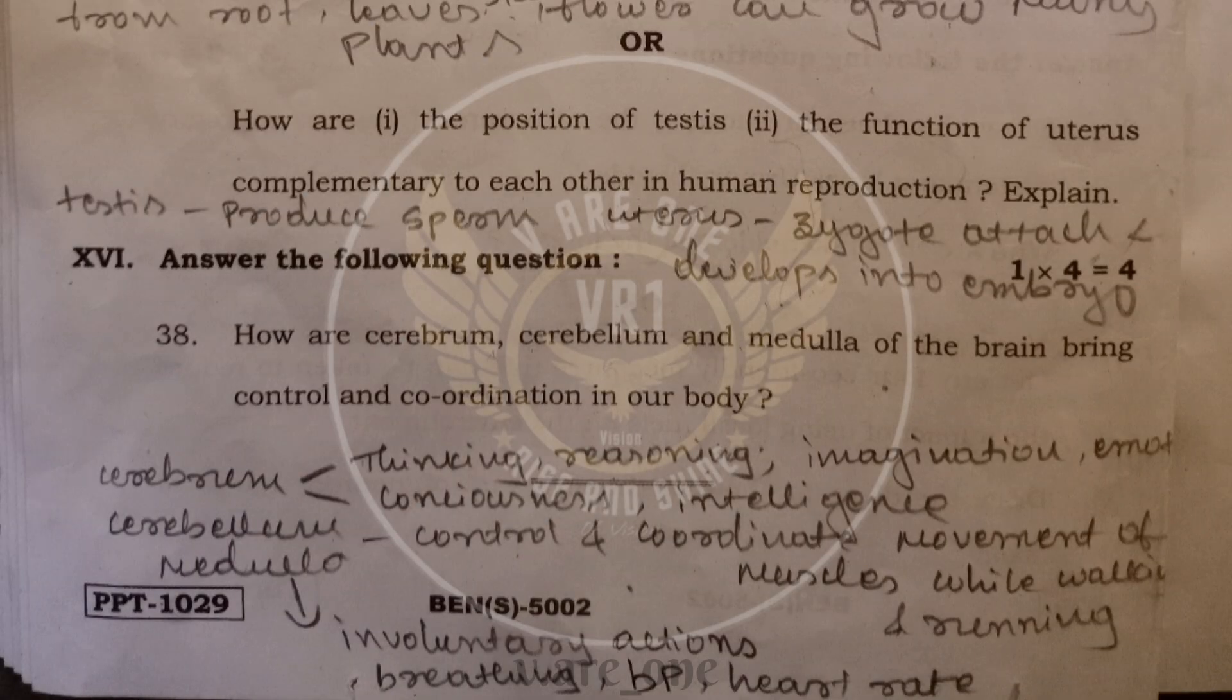And thirty-eighth question. How are cerebrum, cerebellum, and medulla of the brain bring control and coordination in our body? Cerebrum helps in thinking, reasoning, imagination, emotions. It's the seat of intelligence and seat of consciousness. Cerebellum helps to control and coordinate the movement of muscles while walking and running. Medulla, it helps in involuntary actions like breathing, blood pressure, heart rate.